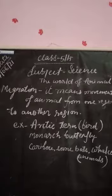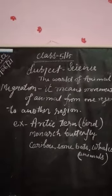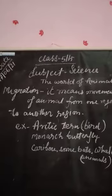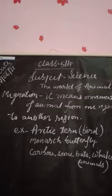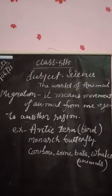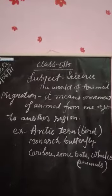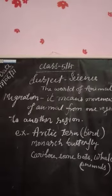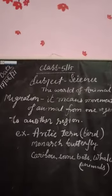इसके लिए एक insect का उदाहरण है — Monarch Butterfly। यह Monarch Butterfly migration करती है। यह अपने स्थान से दूसरे स्थान तक migration करती है।